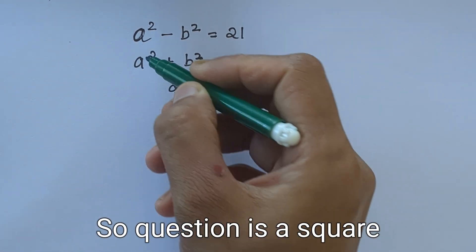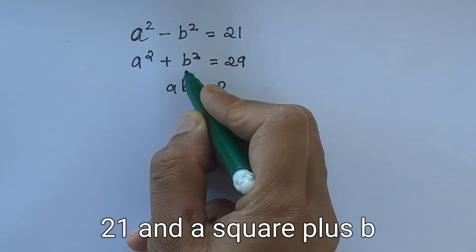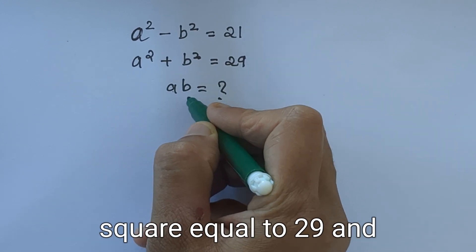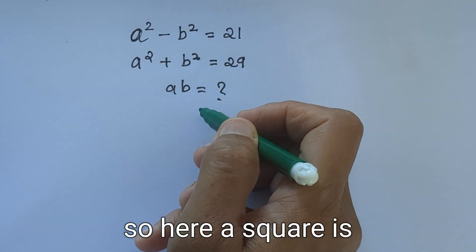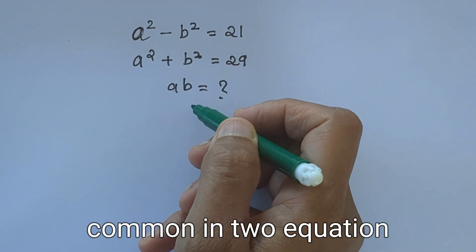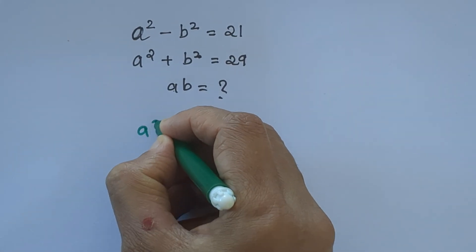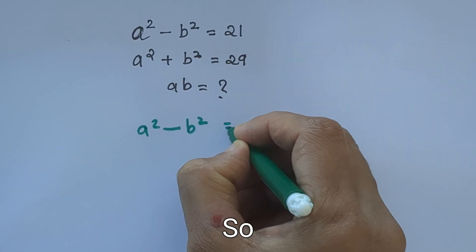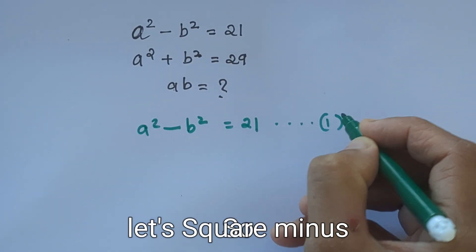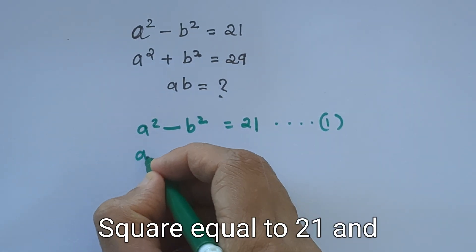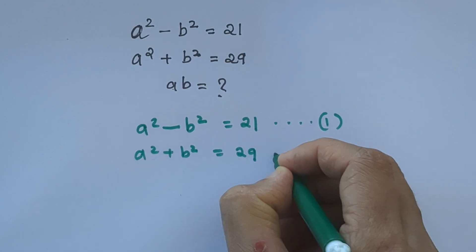Hello everyone. Our question is: a squared minus b squared equals 21, and a squared plus b squared equals 29, and we have to find out a times b. Here, a squared is common in both equations and b squared is common in both equations.